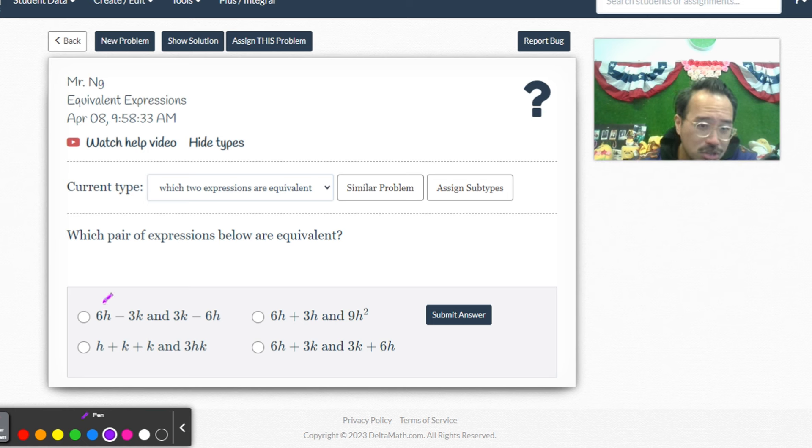You can't subtract and just turn them around. For instance, a minus b is not the same thing as b minus a, because the commutative property does not work for subtraction.